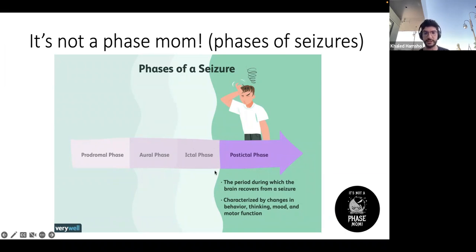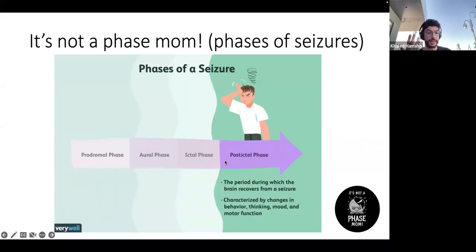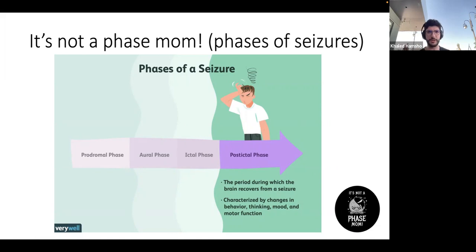The ictal phase is the actual seizure itself — 'ictal' means seizure. After the seizure finishes, we enter the post-ictal period, which is the period right after the seizure. It can last a few hours to even a day. The brain is fatigued from all the firing and needs time to recover. During this time the patient is usually confused and not fully aware. Sometimes in the post-ictal period, especially if a seizure affected the muscles, there is Todd's paralysis.